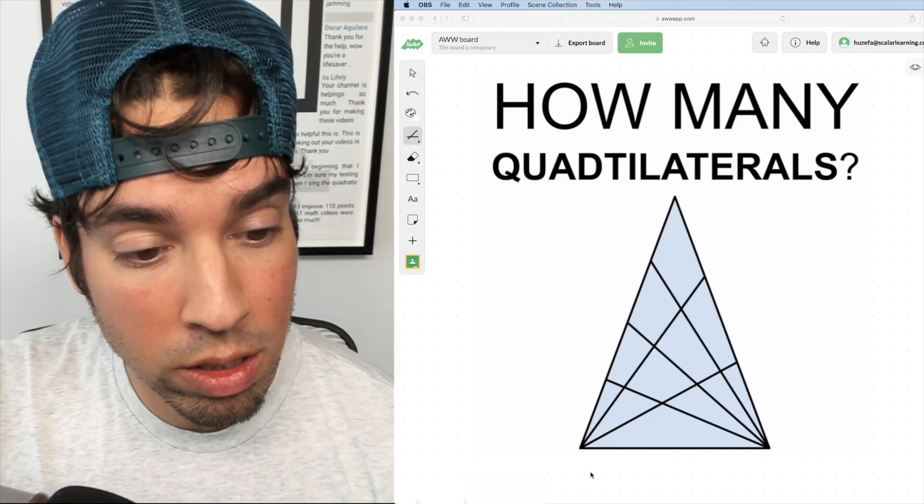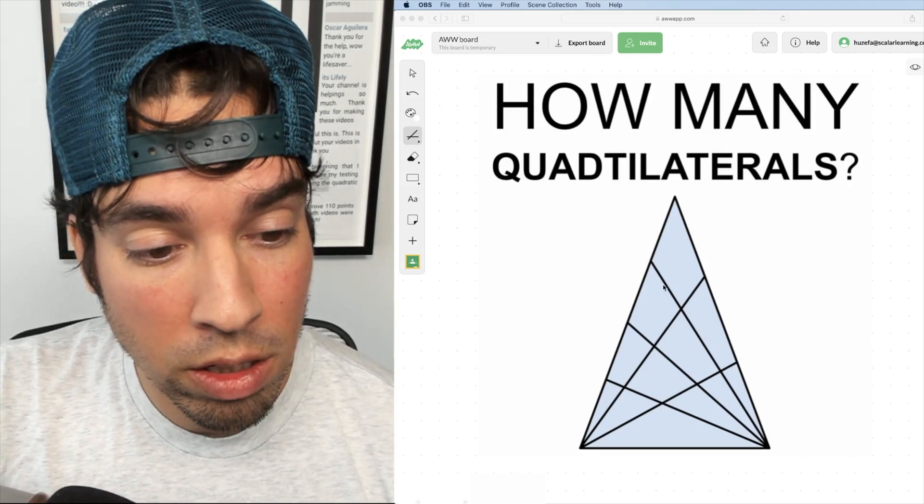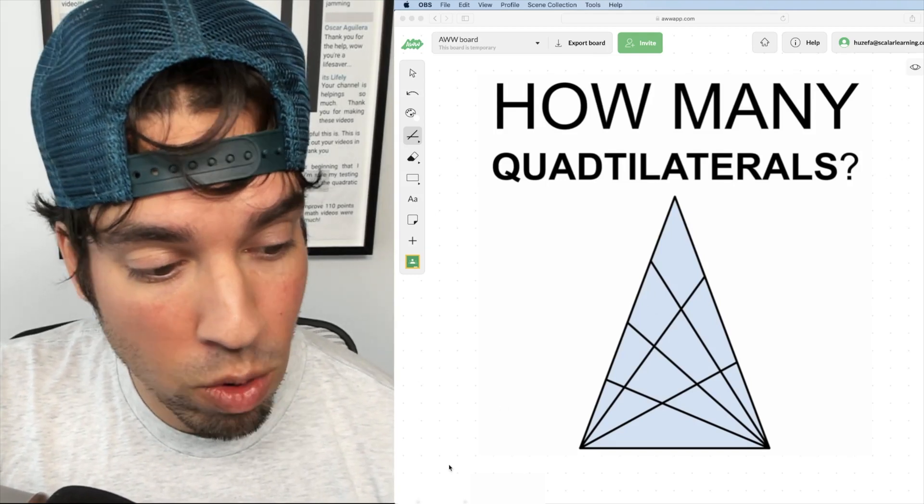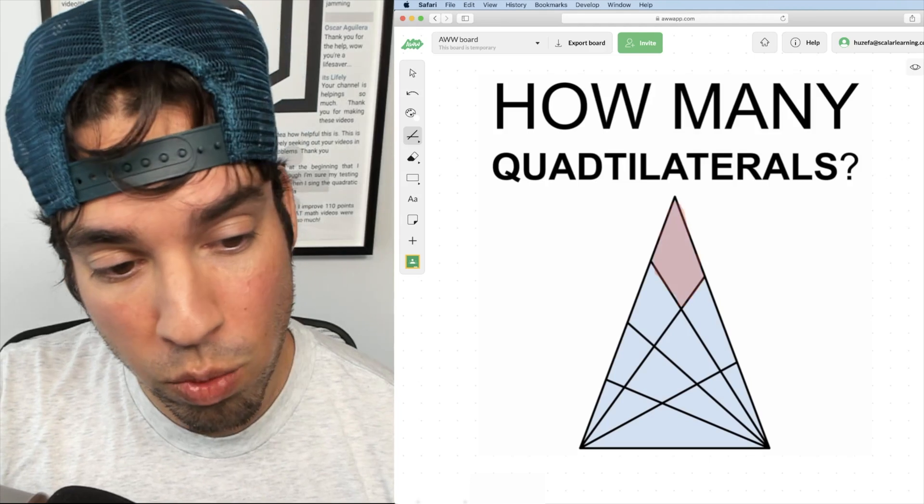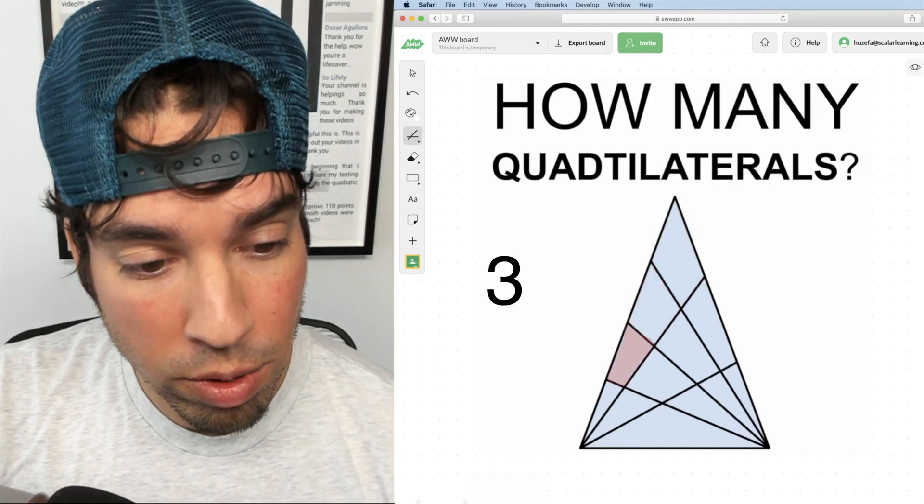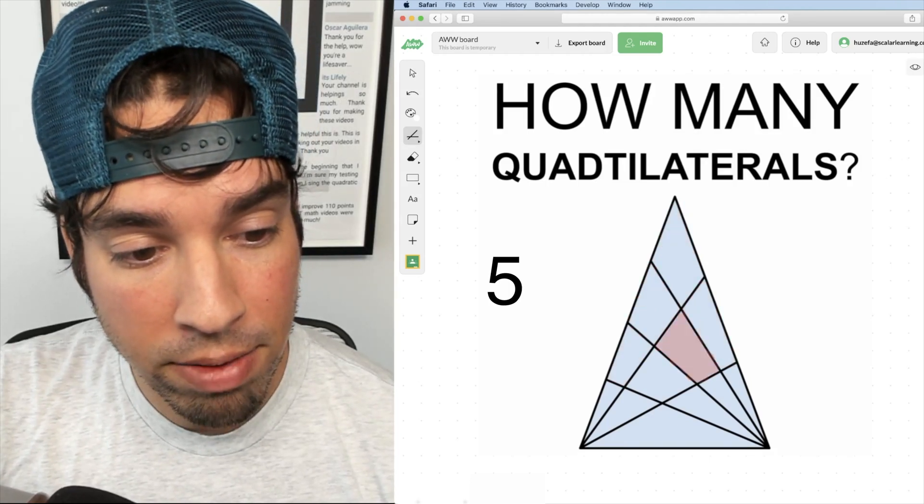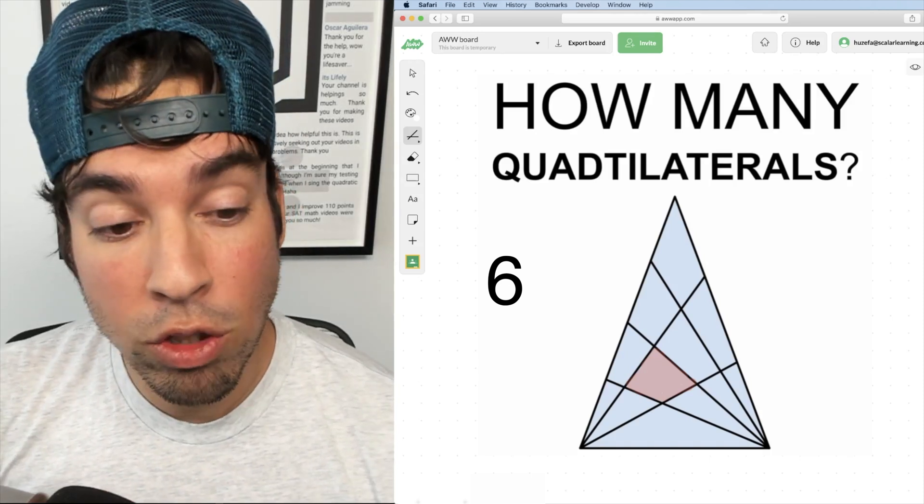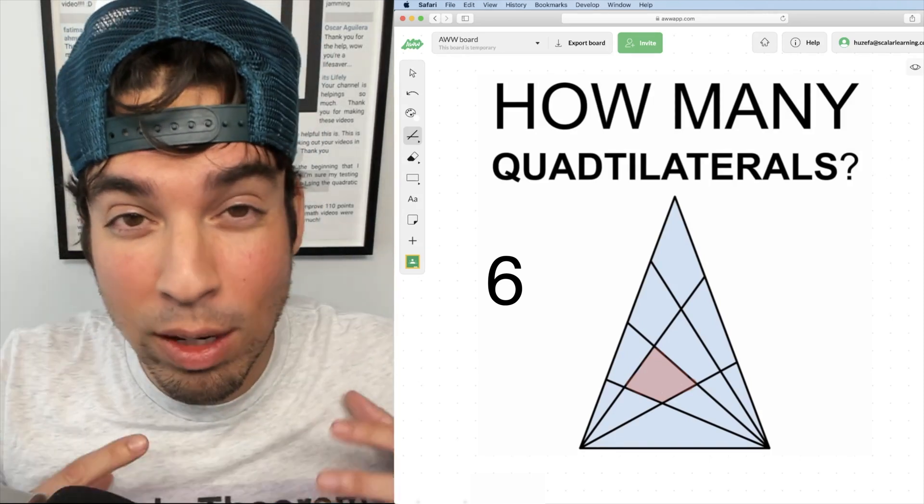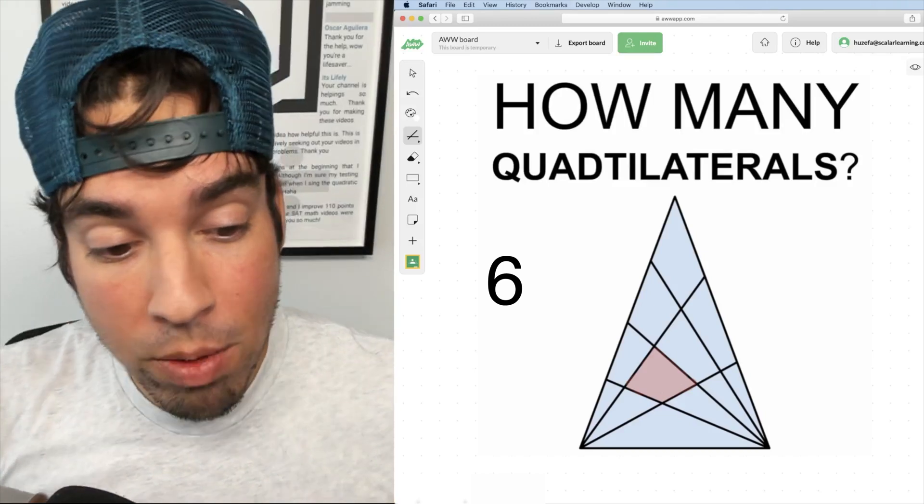We're going to start with ones that are simply composed of one, just within the lines of one shape. So you can see we've got one, two, three, four, five, and six. So that's six quadrilaterals of the size of just one discrete shape.